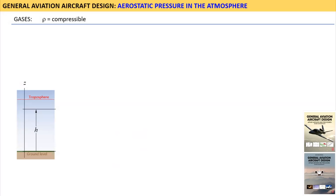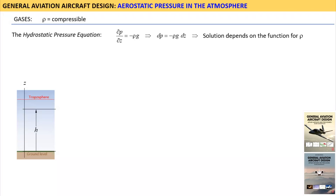As implemented here, the result is limited to the troposphere only. We start by writing the hydrostatic pressure equation, which is derived in a different video. Let's separate the variables. Since gases are compressible, the trick is to come up with an expression that describes how the density of the gas changes with altitude.